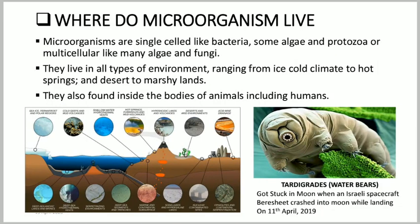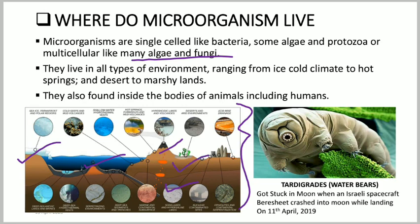Where do microorganisms live? Microorganisms can be single-celled like bacteria, some algae, and protozoa, or multicellular like algae and fungi. They live in every environment — they may live in ice-cold conditions, inside water, inside soil, in hot conditions like volcanoes, in hot deserts, and in marshlands. Microorganisms can live anywhere, including inside the human body and in animal bodies.